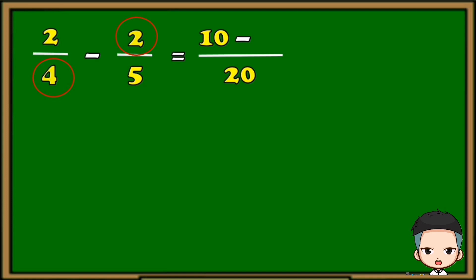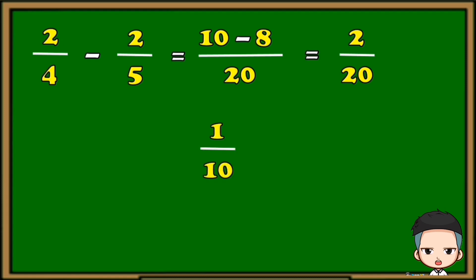Next, we're going to multiply the denominator of the first term and the numerator of the second term. 4 times 2 is 8. Now let's simplify our answer. Let's copy the denominator first. 10 minus 8 is 2, so we now have 2 over 20. 2 over 20 can still be simplified; the simplified form of 2 over 20 is 1 over 10. 1 over 10 is our final answer.